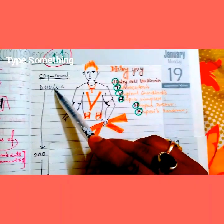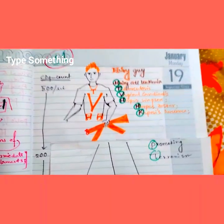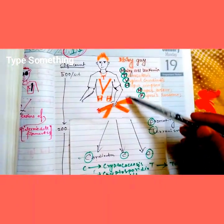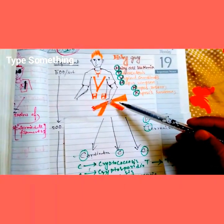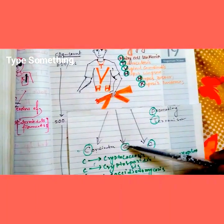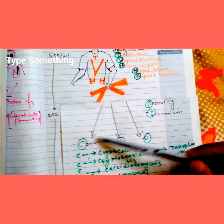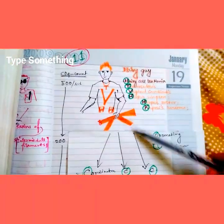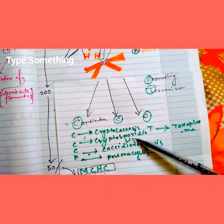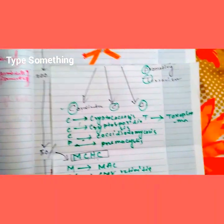From 500 down to 200 CD4 count, these infections occur. The guy is holding a gun, so he is a terrorist promoting terrorism in three coordinates — giving us CCCPT: Cryptococcus, Cryptosporidiosis, Coccidioidomycosis, Pneumocystis, and Toxoplasma. These infections occur from CD4 count 200 down to 50.